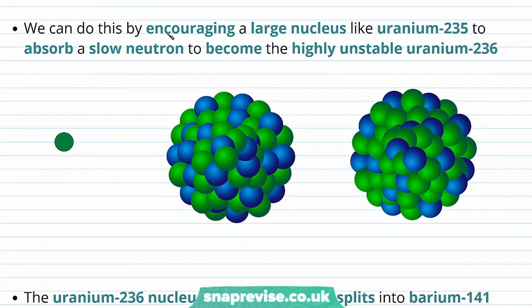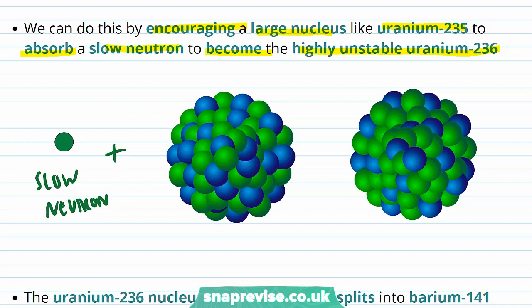We induce nuclear fission by encouraging a large nucleus like uranium-235 to absorb a slow neutron to become the highly unstable uranium-236. So we start with a slow neutron and get uranium-235 to absorb it, producing uranium-236 which is highly unstable.